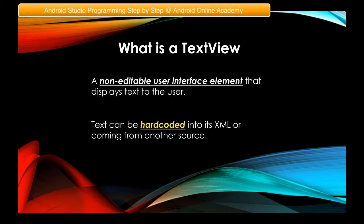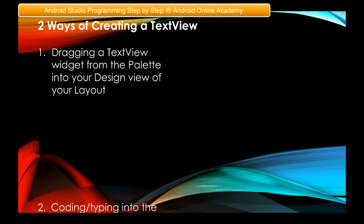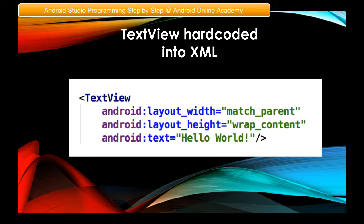When we say text can be hard-coded into the XML of a TextView, here is an example. You have android:text equal to double quotes, and inside you type the text you want displayed — for example, 'Hello World!'. You are not referring to a string resource here; you just type the text directly. The mandatory layout_width and layout_height parameters are also present.